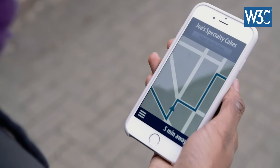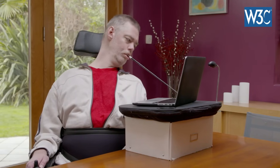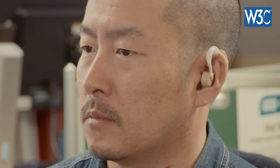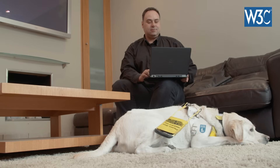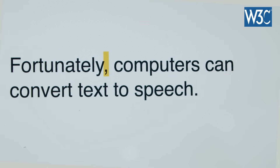The web is for many people an essential part of daily life, at work, at home, and on the road. Web accessibility means that people with disabilities can use the web equally. For example, somebody who cannot use their arms and uses a mouse stick to type, or someone who cannot hear well and uses captions to watch videos, or someone who cannot see well and uses a screen reader to read aloud what's on the screen.